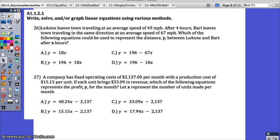This video will go over numbers 26 to 30 on your Algebra 1 Keystone Review Packet. Leanne leaves town traveling at an average speed of 49 miles per hour. After 4 hours, Bart leaves town traveling in the same direction at an average speed of 67 miles per hour. Which of the following equations could be used to represent the distance Y between Leanne and Bart after X hours?